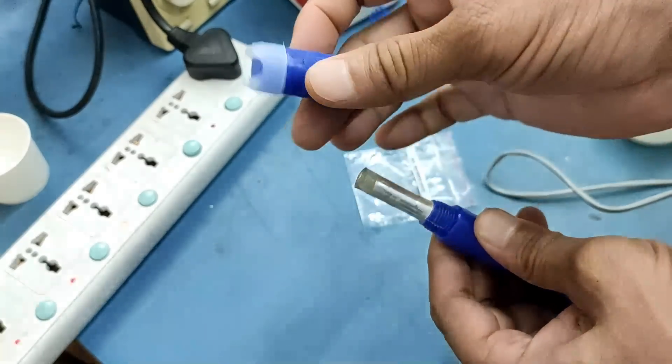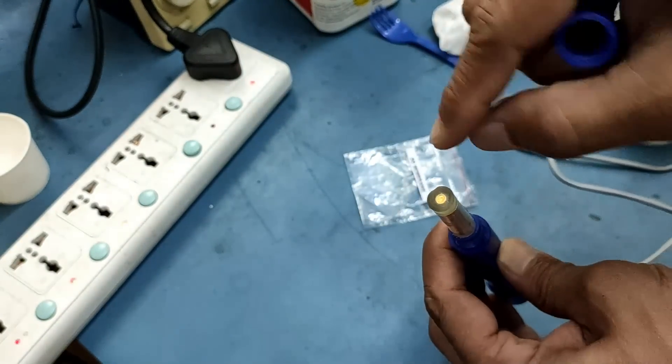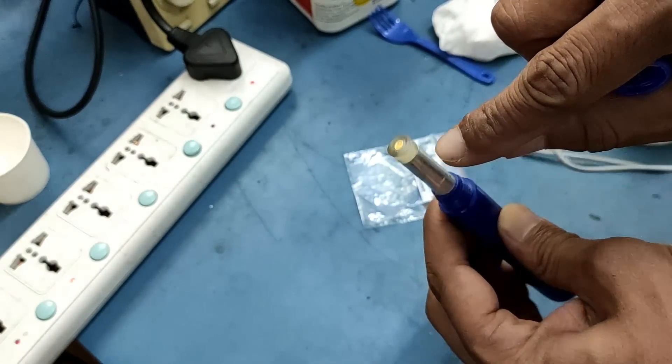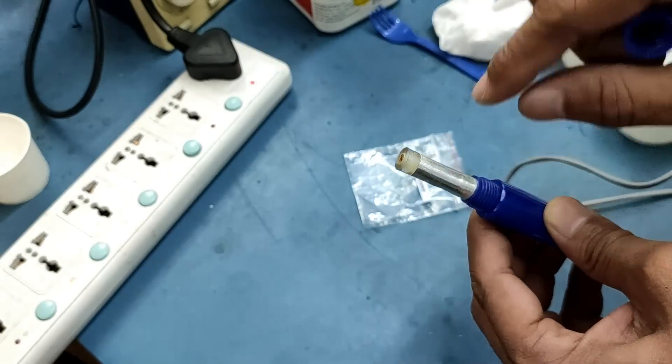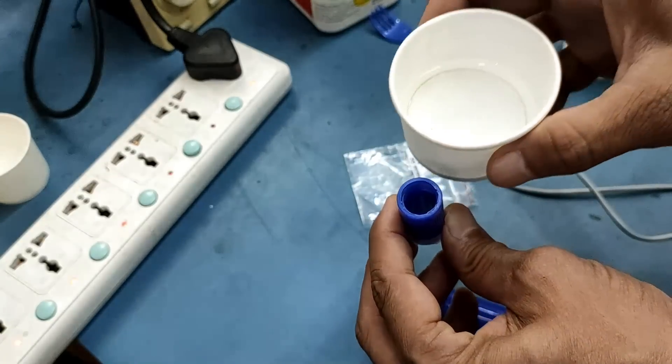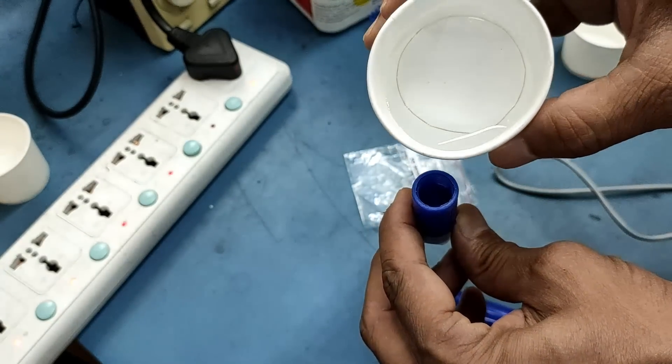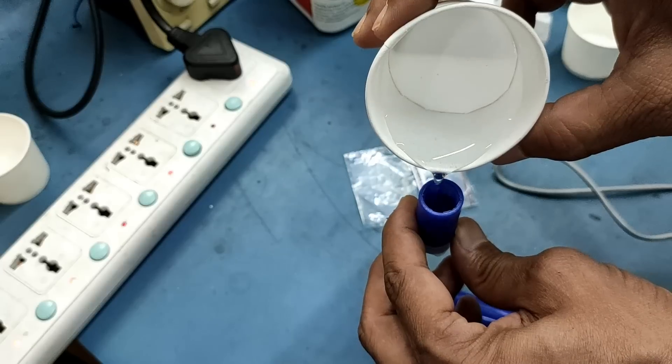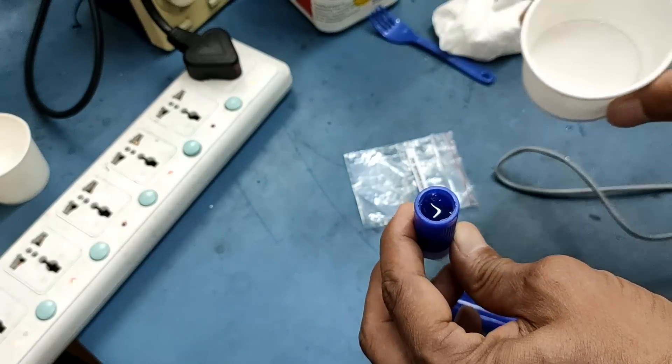Unscrew the membrane cap from the probe and fill about two-thirds volume of the cap with KCL solution. Make sure the probe is in a vertical position with respect to the horizontal plane. Carefully screw the cap back to the probe.